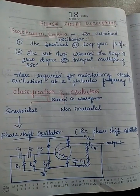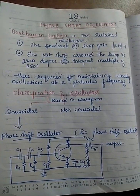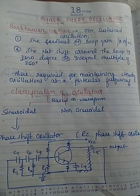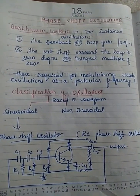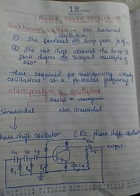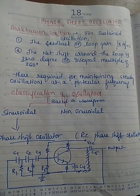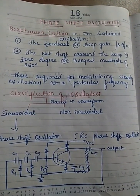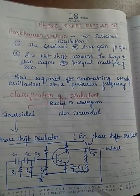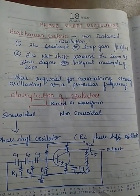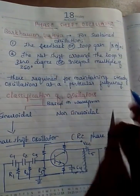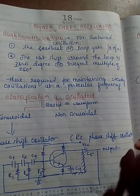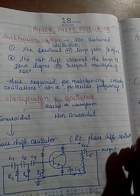Before going directly to the topic, we should know what the Barkhausen criteria is and the conditions for sustained oscillation. You already know the conditions for an amplifier to be an oscillator. There are two main conditions: the first one is that the feedback must be positive.